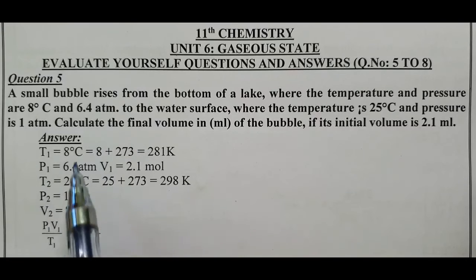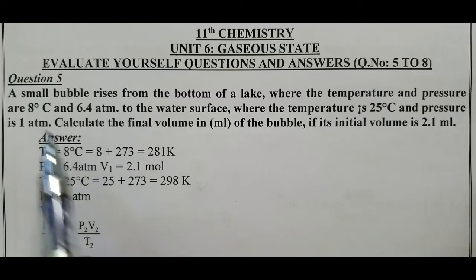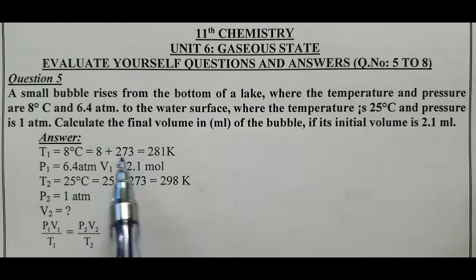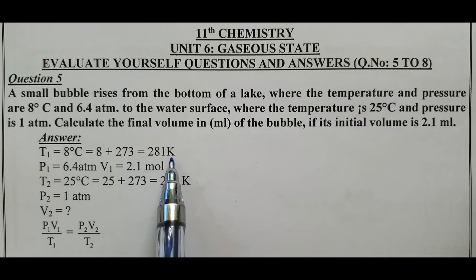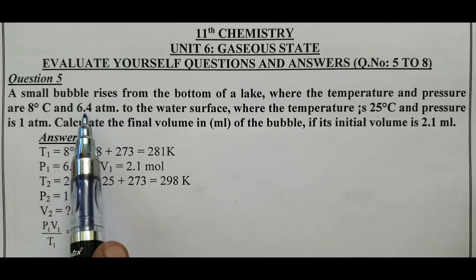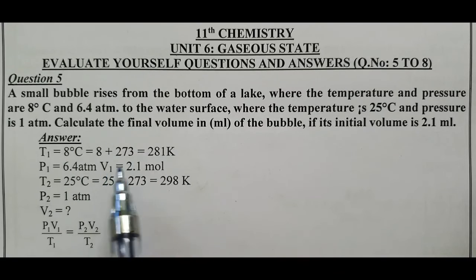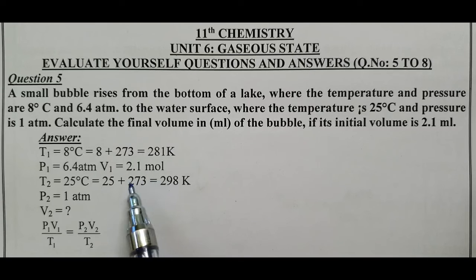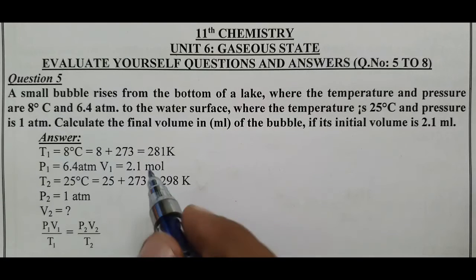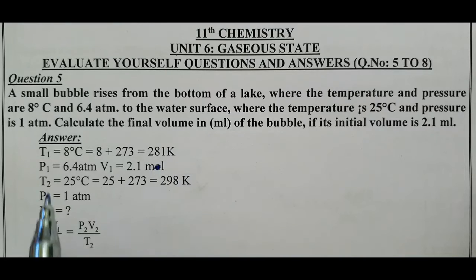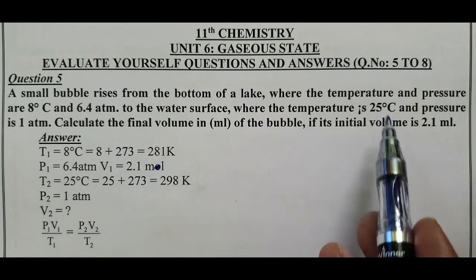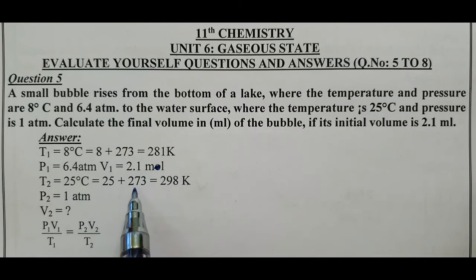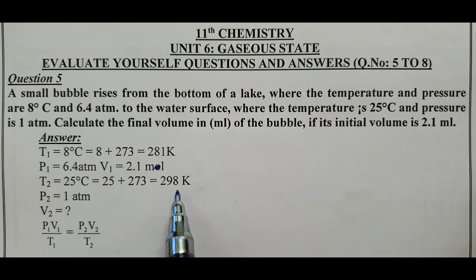T1 = 8°C, converted to Kelvin: 8 + 273. P1 = 6.4 atm. V1 = 2.1 mL. T2 = 25°C, converted: 25 + 273 = 298 K (approximately 300 K). P2 = 1 atm. We need to calculate V2.